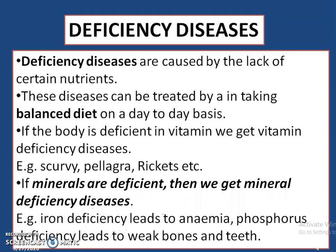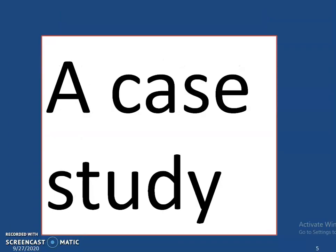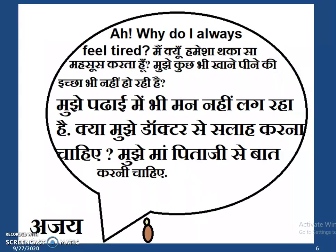For example, iron deficiency leads to anemia, and phosphorus deficiency leads to weak bones and health. Let us observe a very small case study.